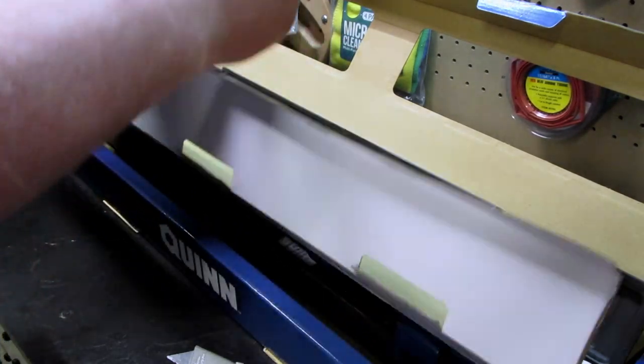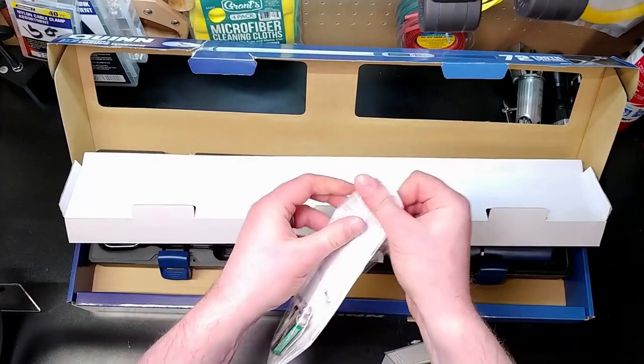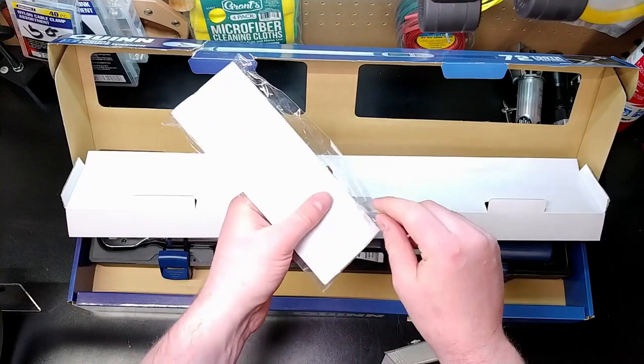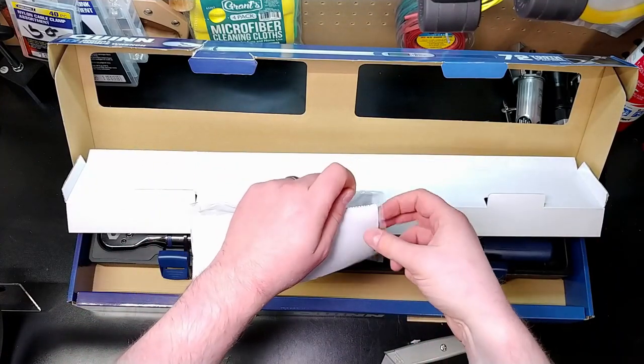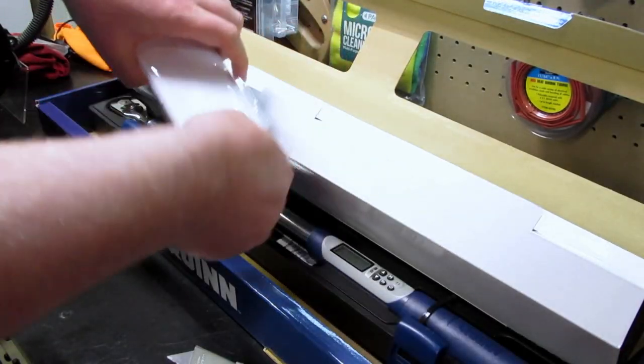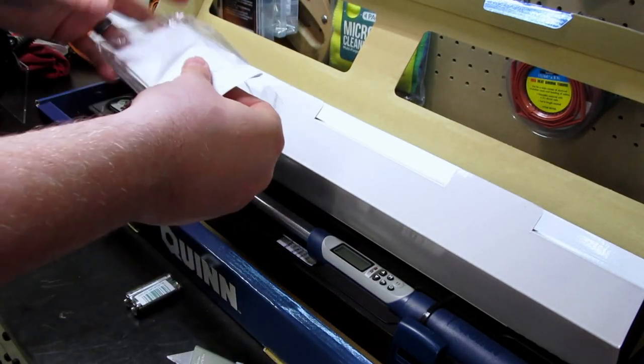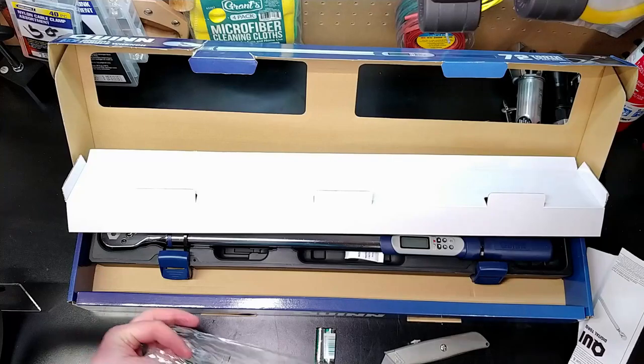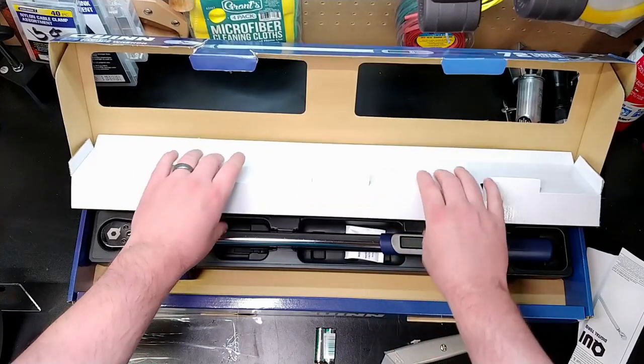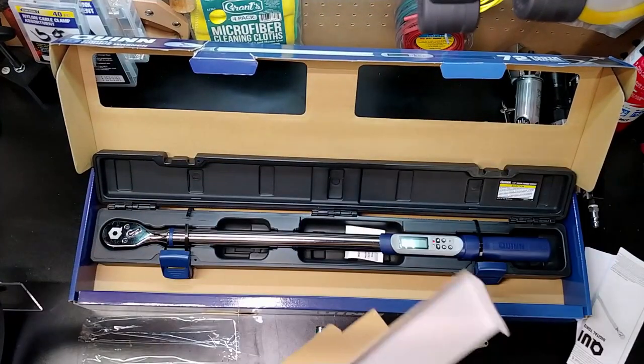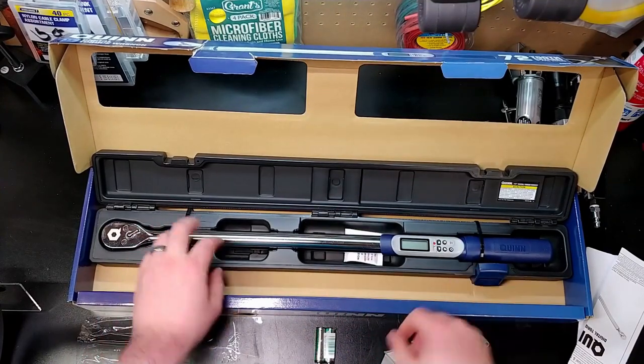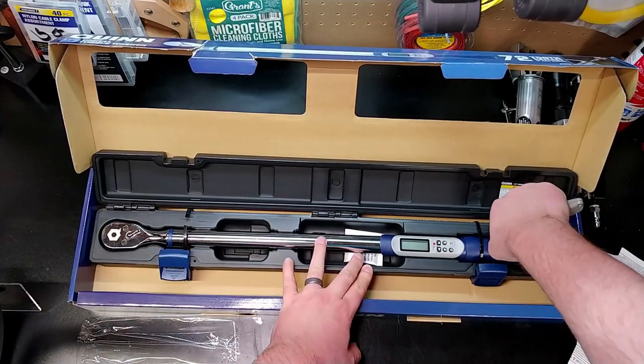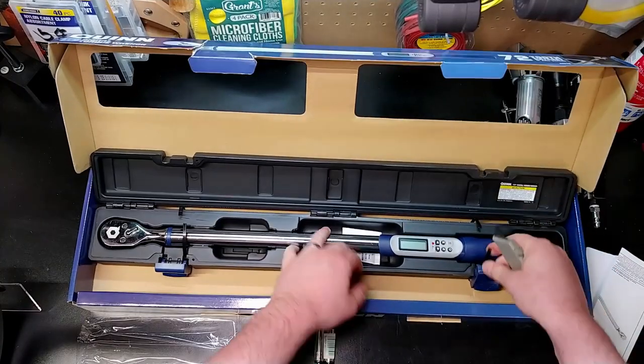It comes with batteries here and an instruction manual. I've thought about getting the Gearwrench one, then this one. You can get these 20% off pretty much all the time, and compared to the Gearwrench, this one has the angle feature, so we're going to be looking at that and see how well that works.